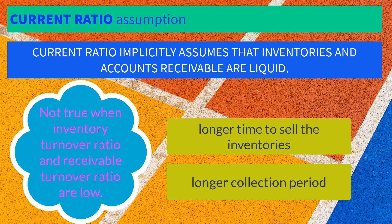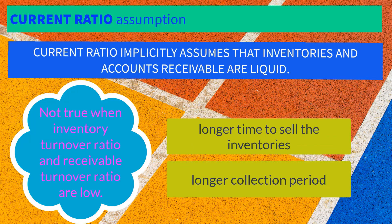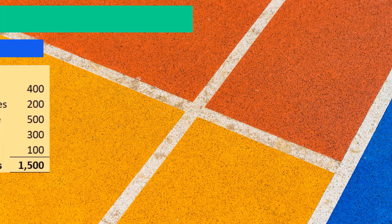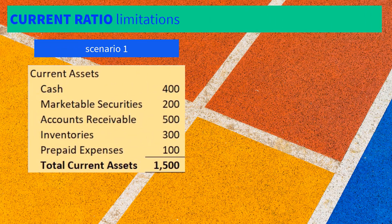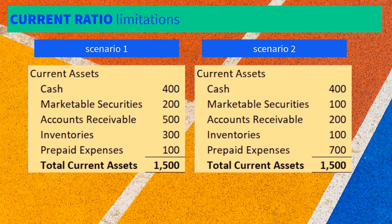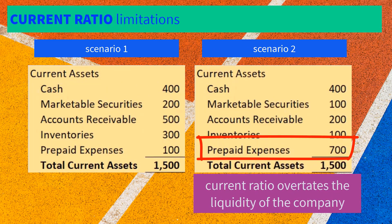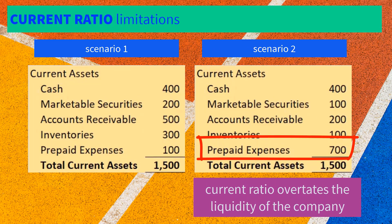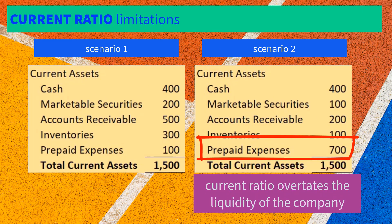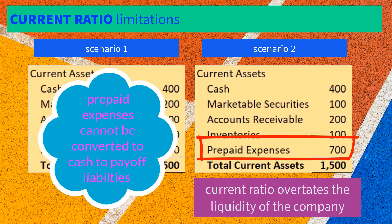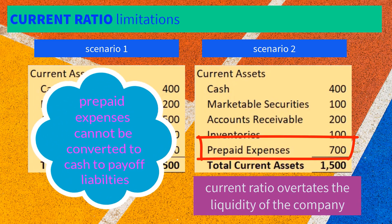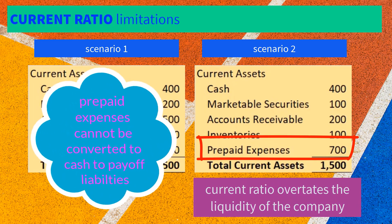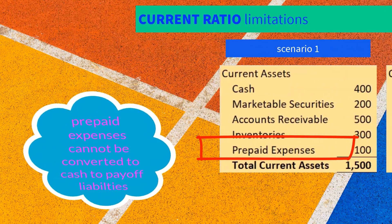Turnover ratios will be discussed in another video. If most of the current assets are composed of prepaid expenses, then the current ratio overstates the liquidity of the company. Note that prepaid expenses cannot be converted to cash to pay off liabilities.